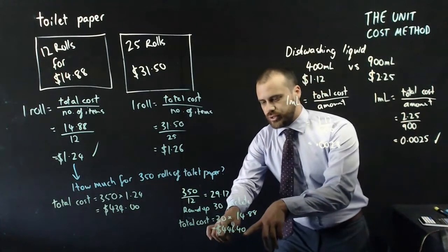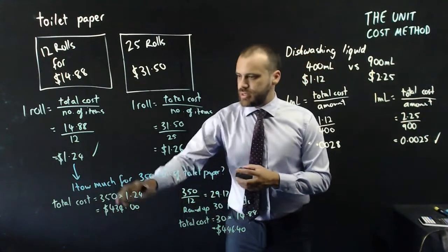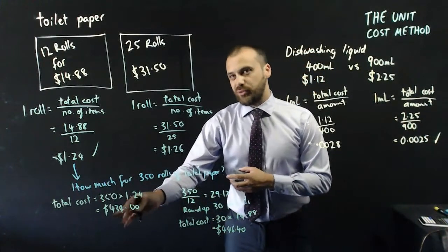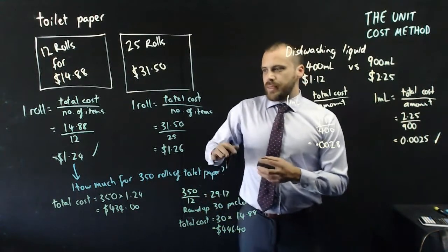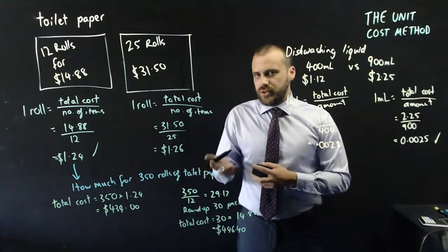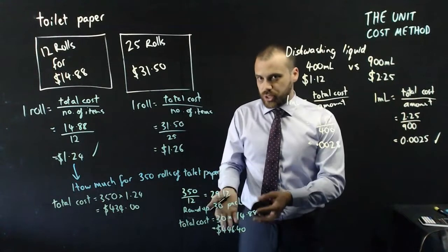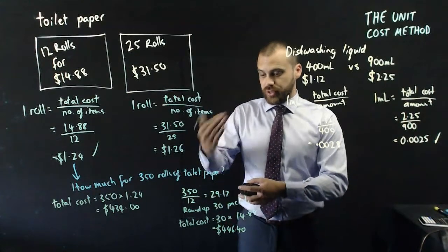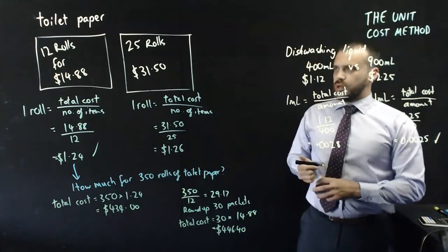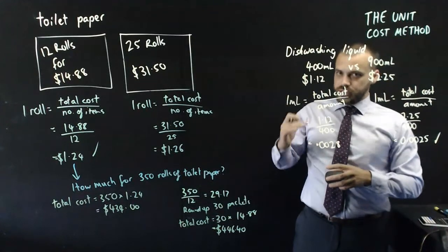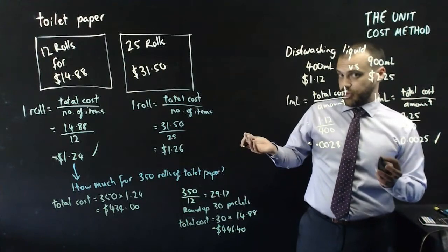So two answers here, $446.40, $434. They're different things. This one is, how much for 350 rolls of toilet paper? This question is more complicated. It's, if you have to buy 350 rolls of toilet paper in these packets, how much will it cost? You'll have to round up to 30 packets, and therefore it's going to be $446.40. That is the unit cost method. You divide down so you find the cost of one item, and then you can multiply up to find out whatever you want to find out.